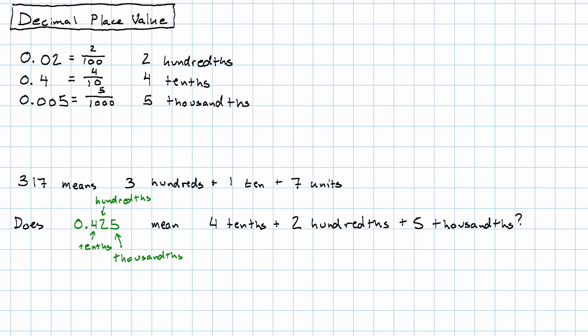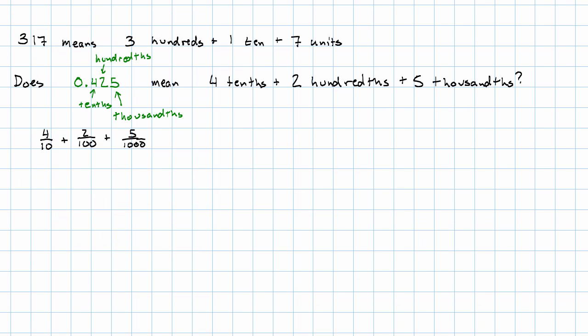Well, let's do that addition and see. In order to actually do this addition, I'm going to need a common denominator. I think my common denominator is going to be a thousand. Four tenths, I'm multiplying the numerator and denominator both by a hundred, so I'm going to get four hundred thousandths.